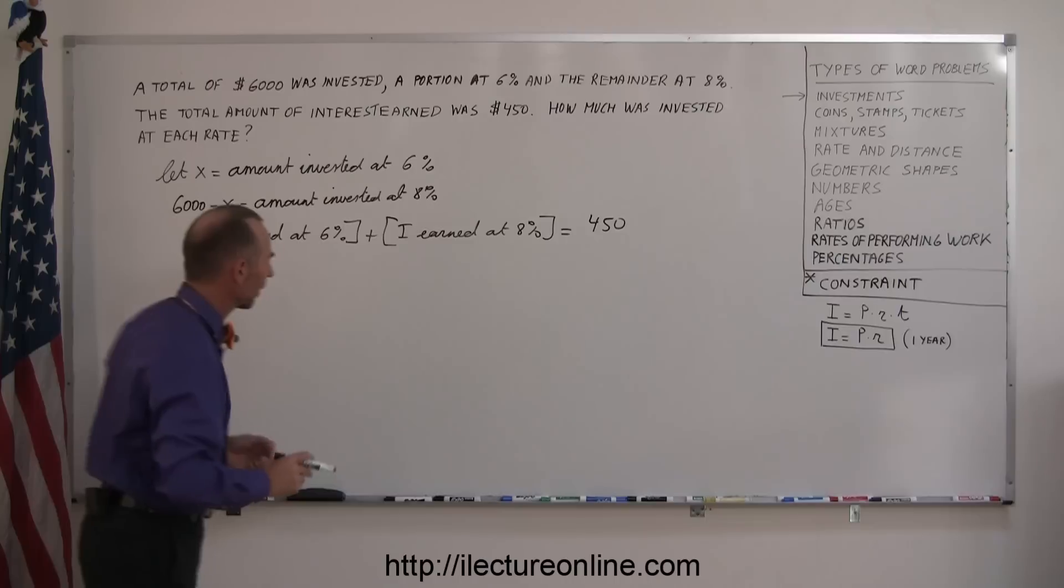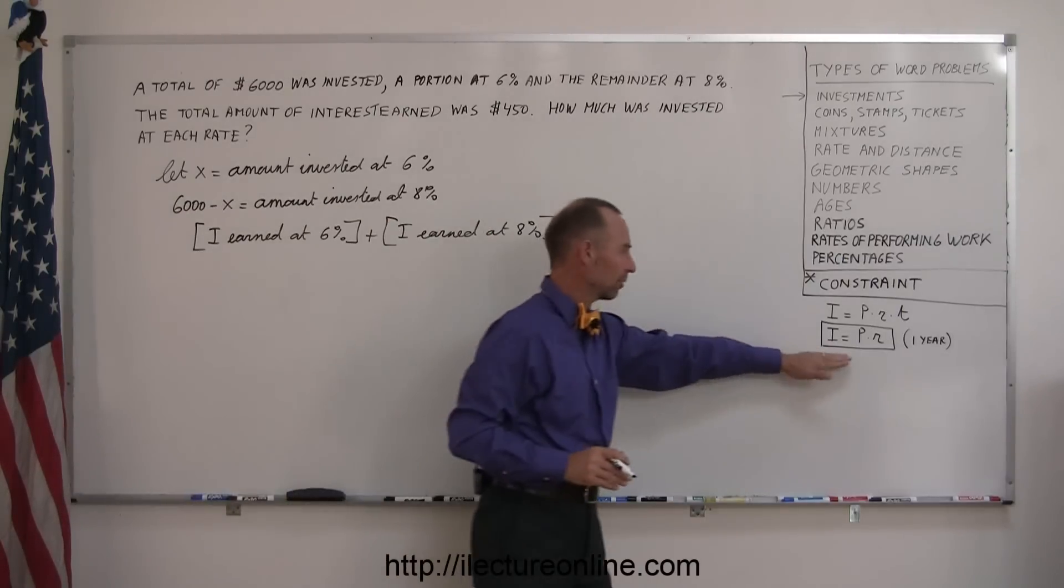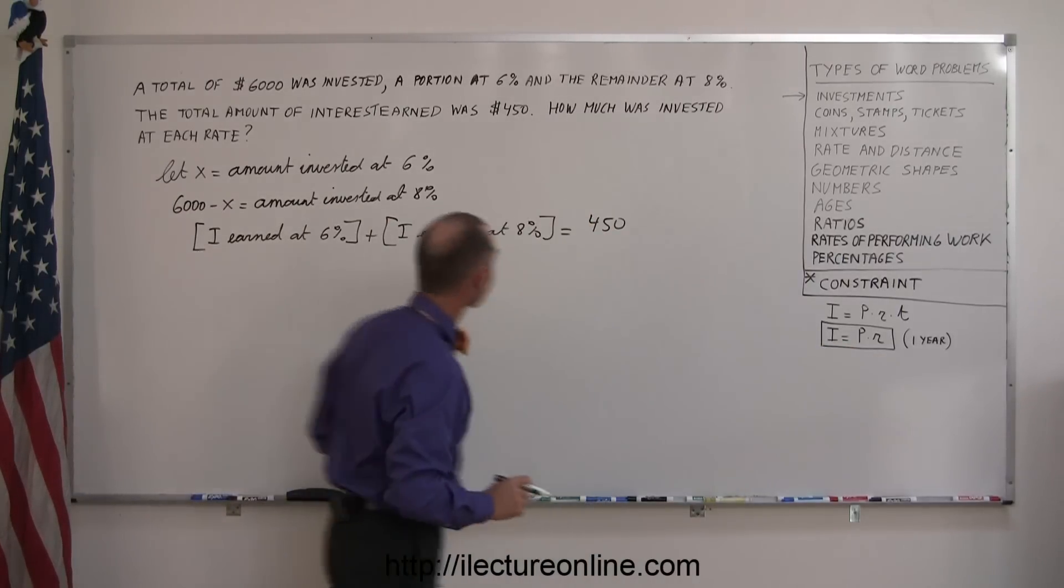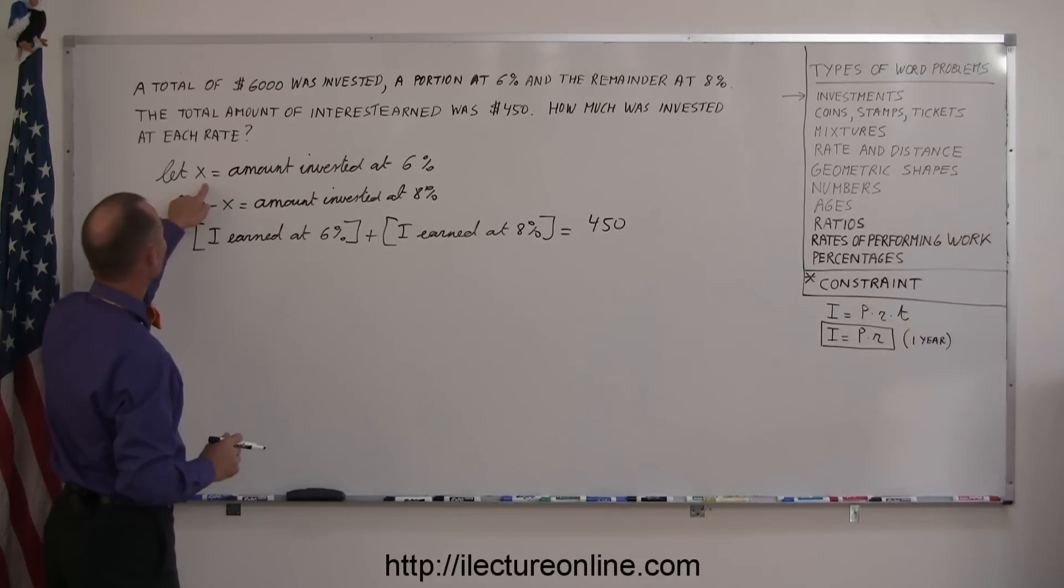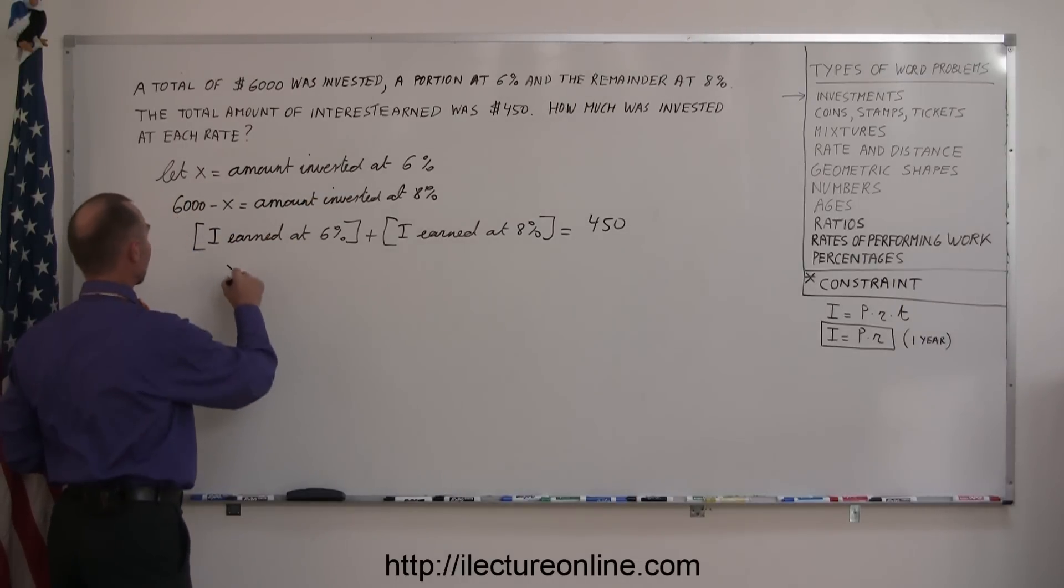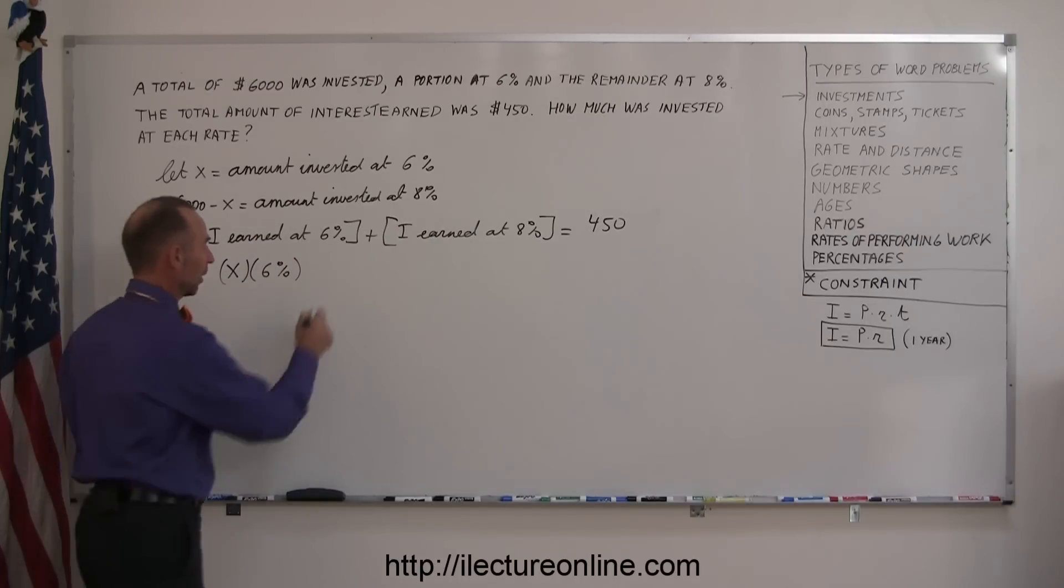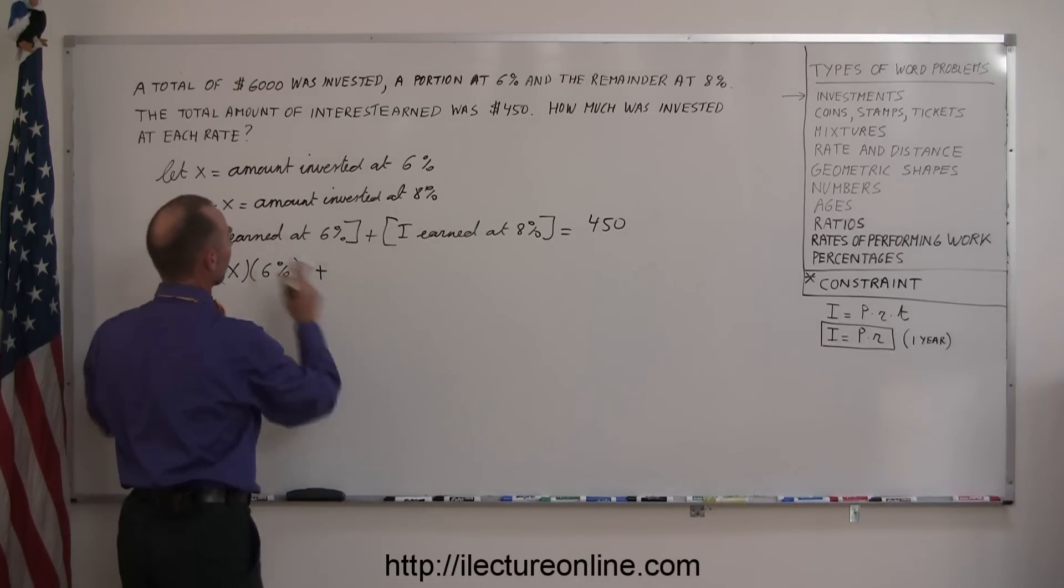And how do I express how much interest I've earned? Coming back over here, it's the principal times the rate. So, principal is X, the rate is 6%, so X times 6% is the amount that I earned at 6%, plus principal times interest...